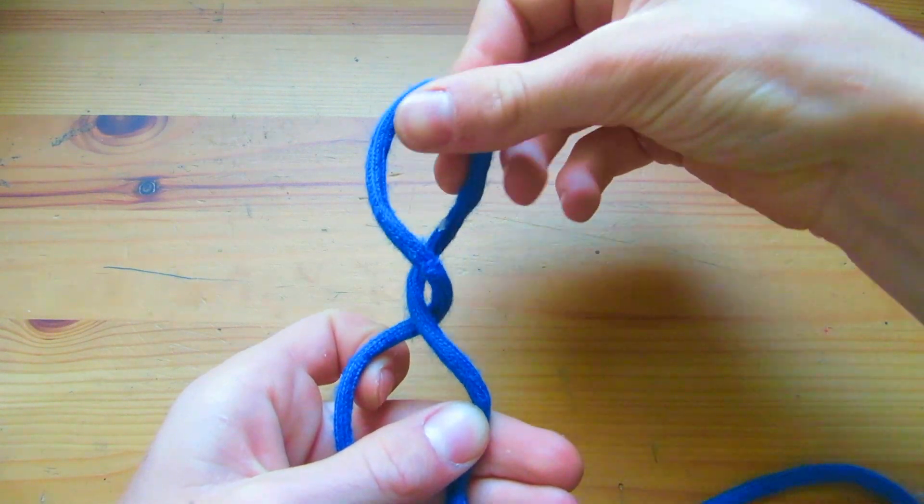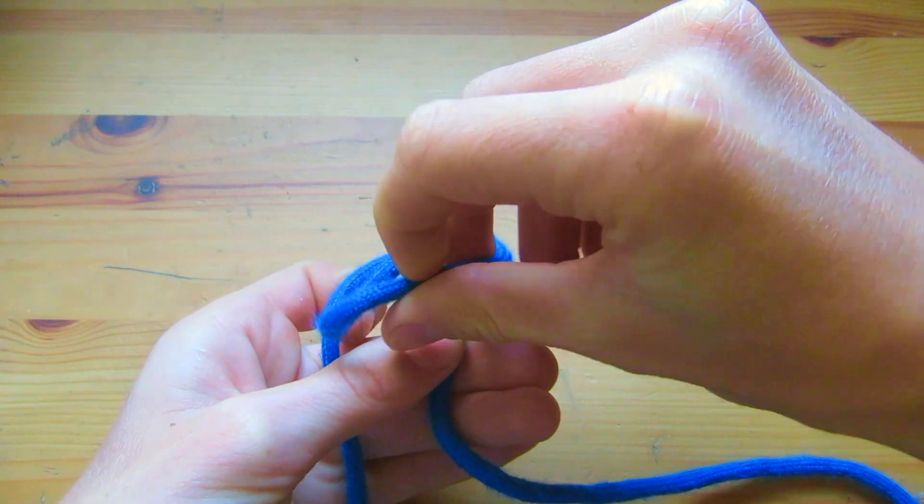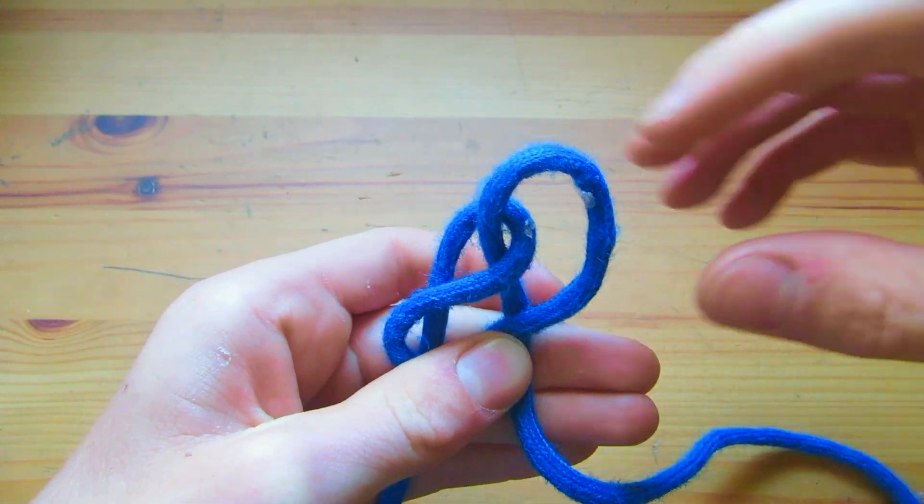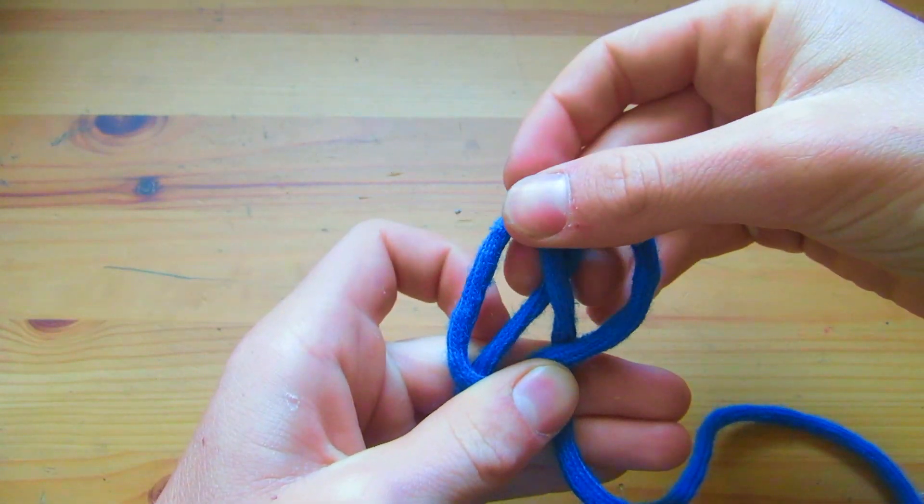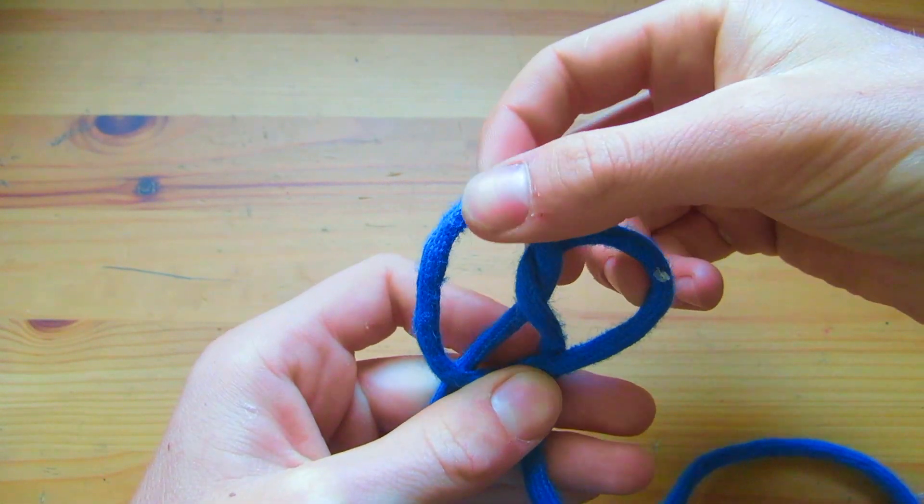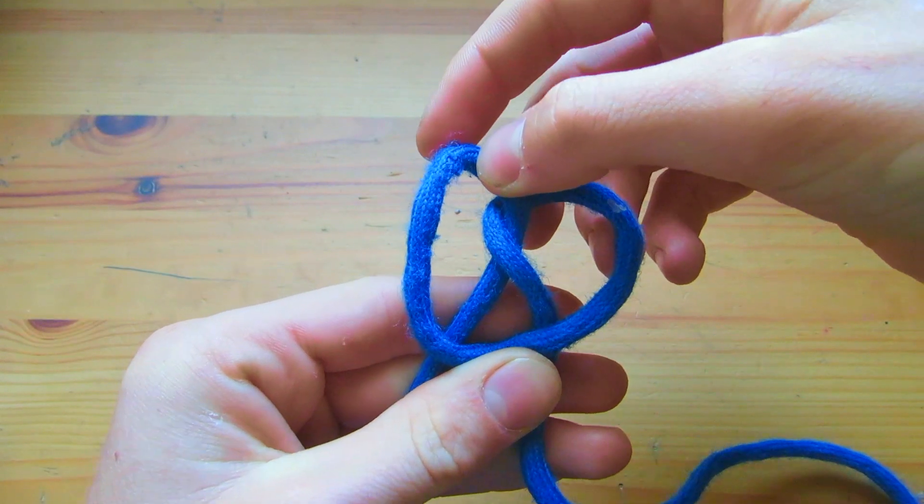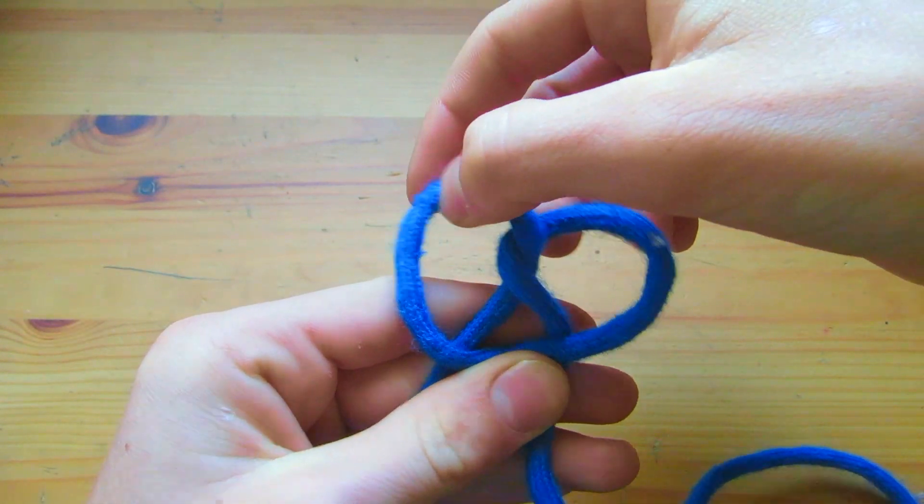Then I'm going to bend this top part down. It's going to look something like this. You want to bend out these loops. So it's like two, one overhand and one underhand loop interconnected.